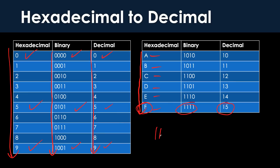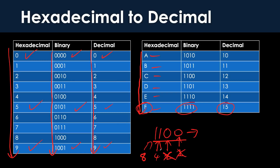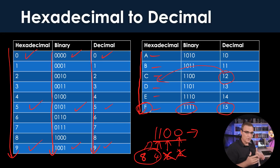So if I gave you a binary number like 1100, the easiest way to work this out is to say: what is that in decimal? The bit values are one, two, four, and eight. We haven't got the lower two bits set, so it's eight plus four, which is 12 — which is C in hexadecimal. If you're not sure about binary to decimal or decimal to binary conversions, have a look at the video where I discuss binary.